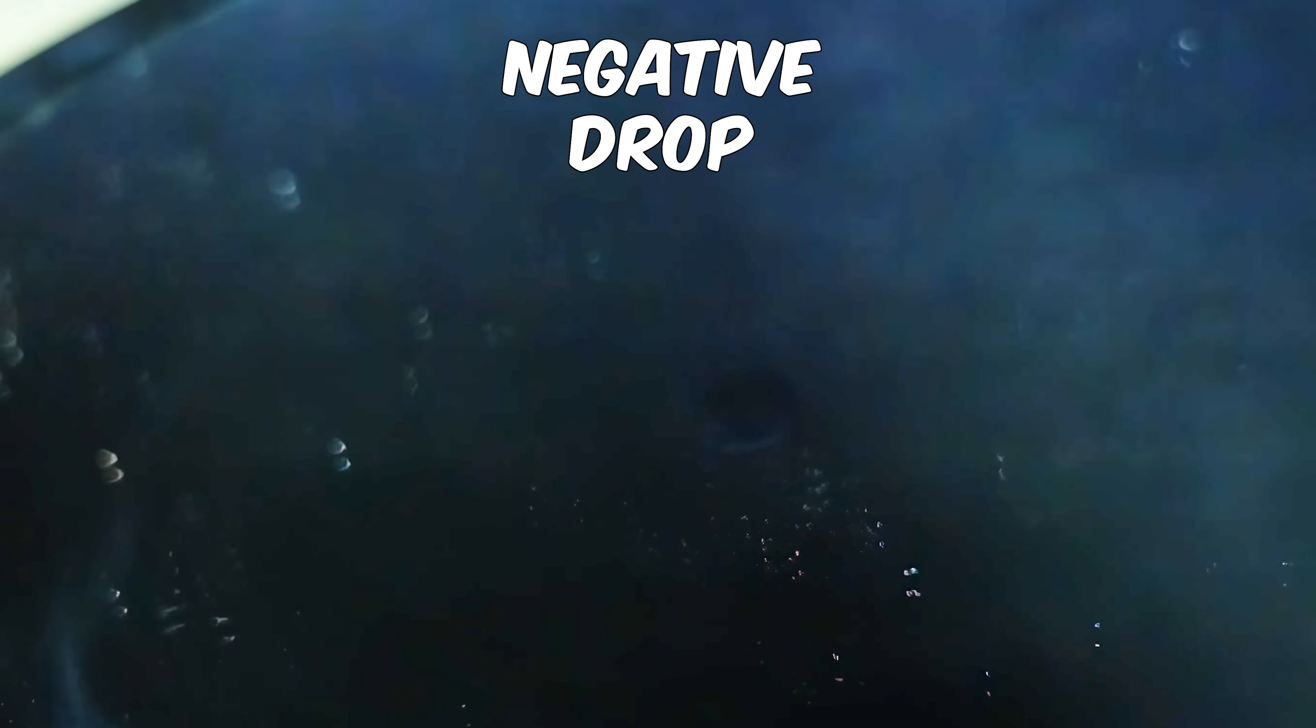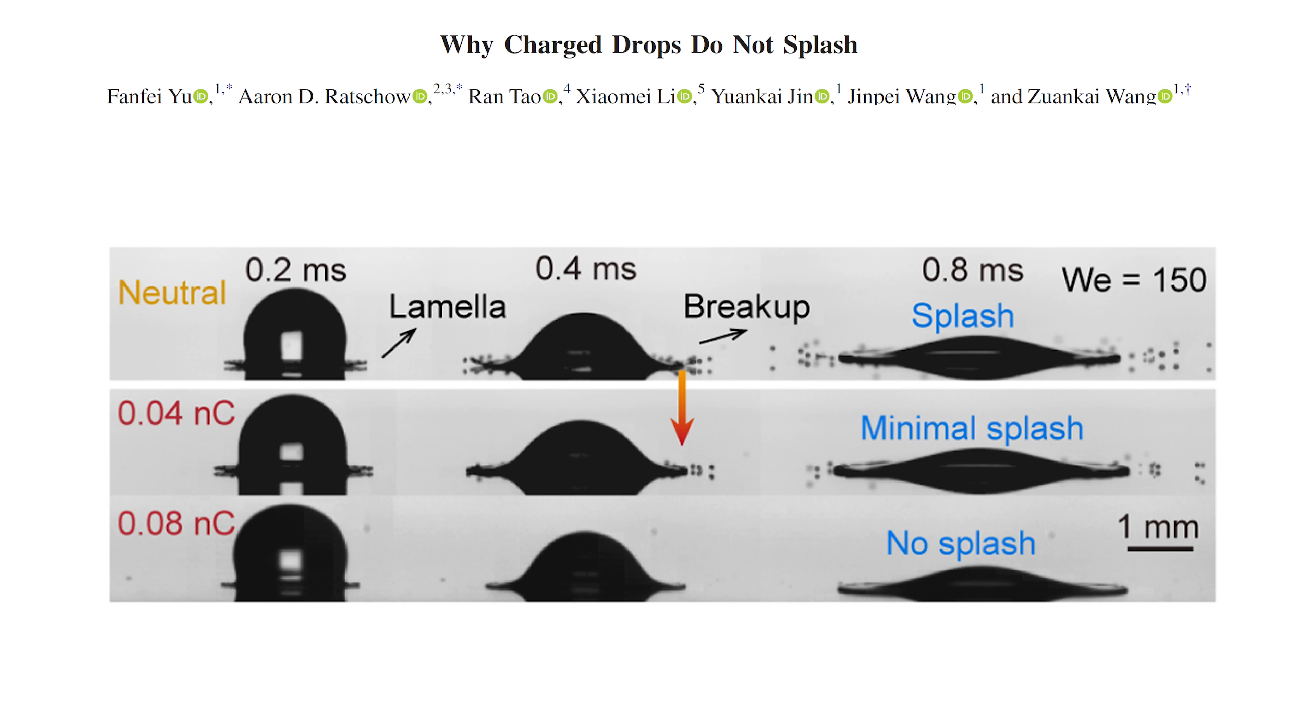So whenever a drop gets a slight charge on it, the splash disappears. Now I'm not able to vary the charge precisely, but in the research paper they show an amazing correlation of splash with charge. The higher the charge, the less splash there is.